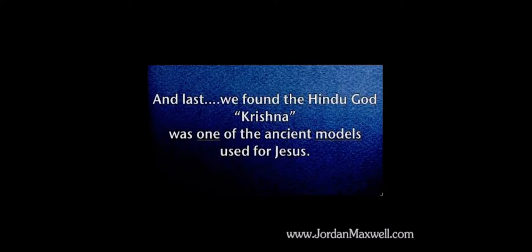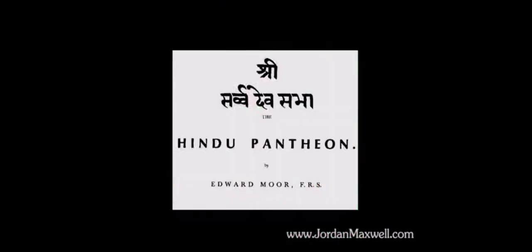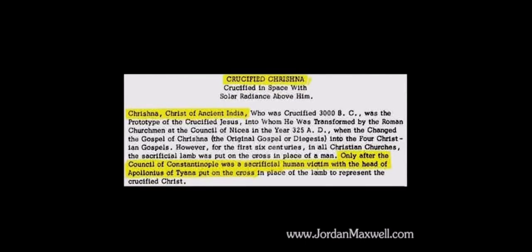The Hindu God Krishna was one of the ancient models used for Jesus — very important. We find the links between the Christos, or Krishna, in Latin — the Christ. Christ, Krishna, Christos — it goes back to Lord Krishna, or 'the Christ one.' In the Hindu pantheon, by Sir Edward Moore, there is a whole article about the crucified Krishna. Krishna was crucified in space with the solar radiance above him. The article says Krishna, the Christ of ancient India, who was crucified about 3000 BC, was the prototype for the crucified Jesus.